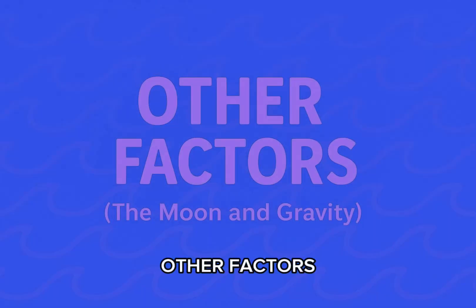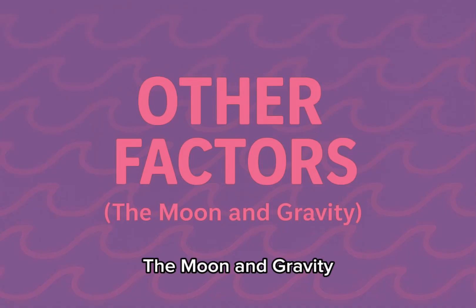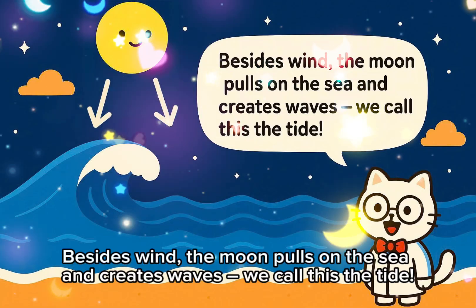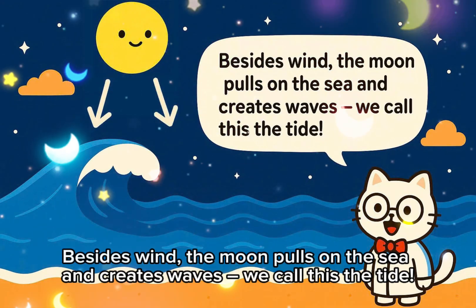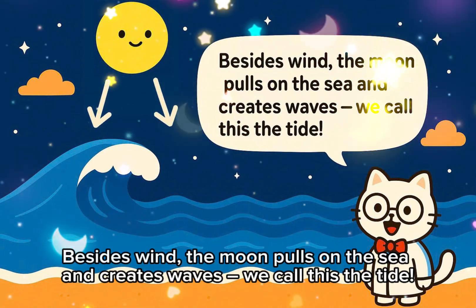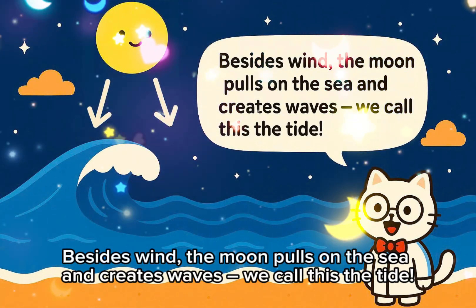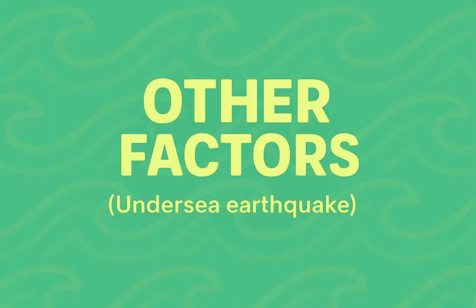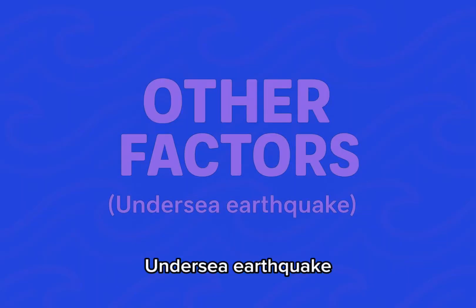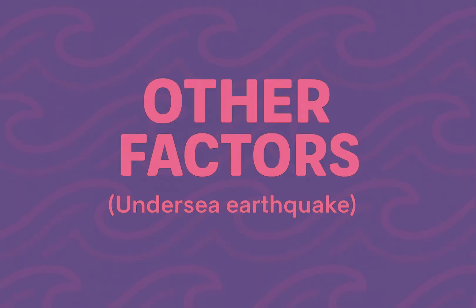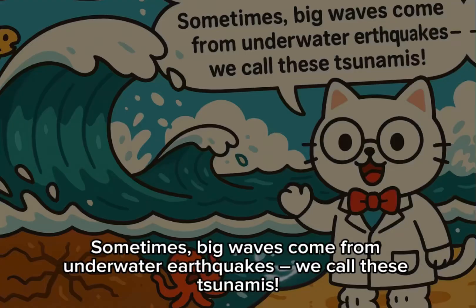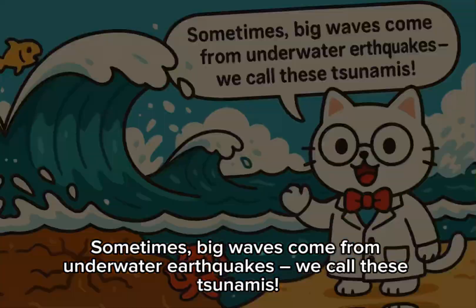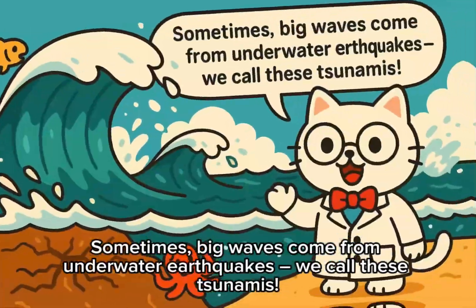Other factors: the moon and gravity. Besides wind, the moon pulls on the sea and creates waves — we call this the tide. Sometimes, big waves also come from underwater earthquakes. We call these tsunamis.